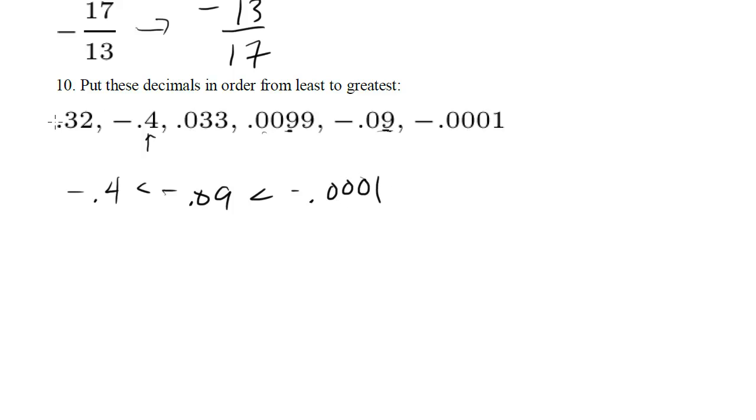Now for the other side, positives, well we have .32, .033, and .0099. Even though this has 9's in it, this 9 is in the thousandths place, where this is in the hundredths place, so this is actually smaller, even though it's got 9's, so this comes next. And then this guy, .033, and then finally the one with the tenths place, .32. So that should be your order, and that's numbers 1 to 10.